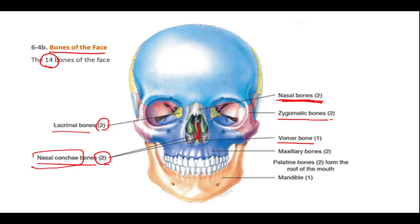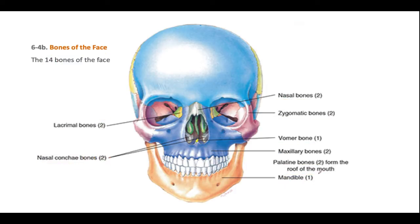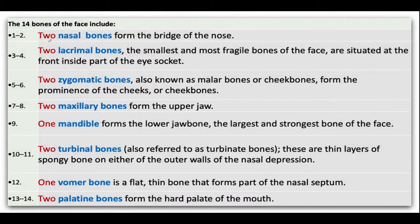The vomer bone is the thin portion right in the middle. The maxillary bone is on top, and in comparison we have the mandible bone on the bottom for chewing. Inside the upper portion of the mouth we have the palatine bones — there are two of them — that form the roof of the mouth. There are two nasal bones that form the bridge of the nose. The lacrimal bones are the smallest and most fragile bones of the face, situated at the front inside part of the eye socket.